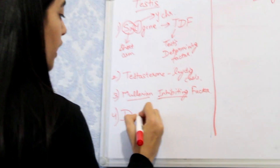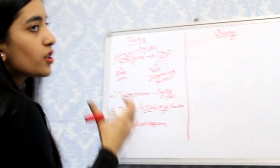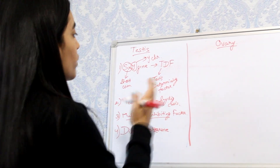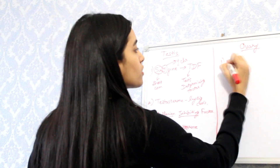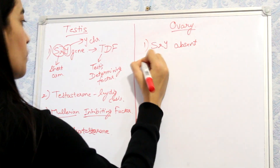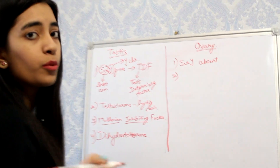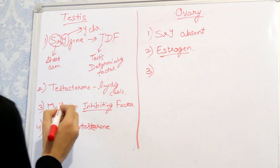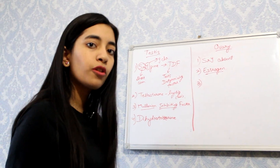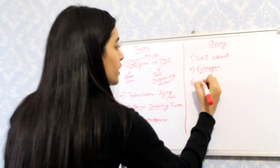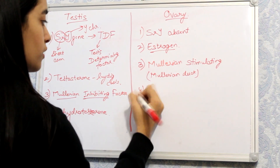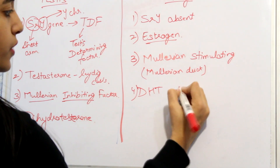The fourth factor for male development is dihydrotestosterone. For the development of the ovary and female reproductive system, we can compare: the SRY gene is absent, testosterone is replaced by estrogen, Mullerian inhibiting factor is absent meaning the Mullerian duct is present and stimulated, and dihydrotestosterone is also absent. These four factors together lead to the development of the ovary and female reproductive system.